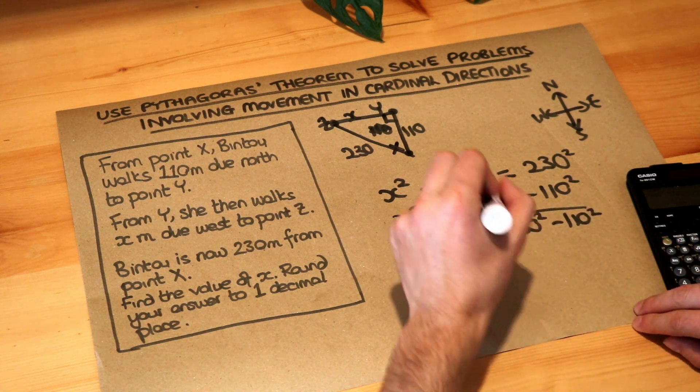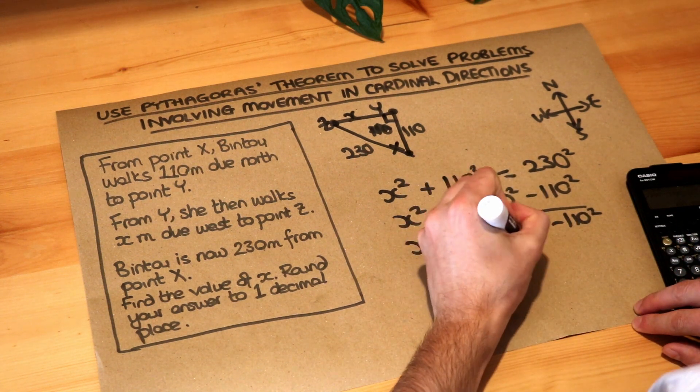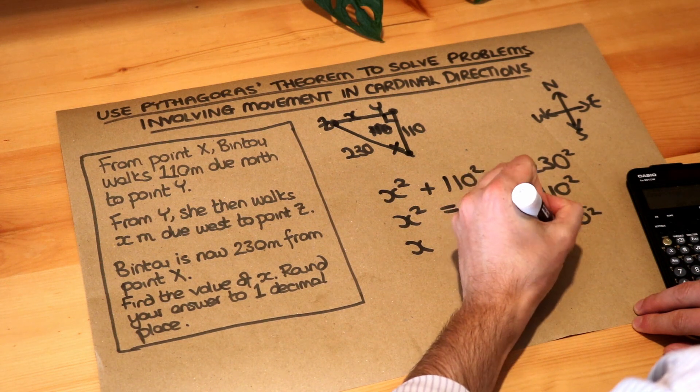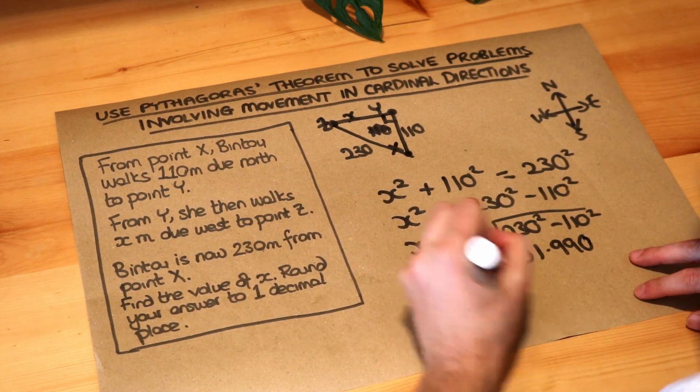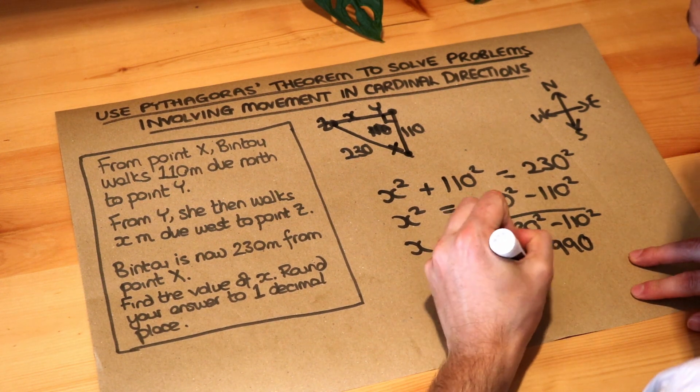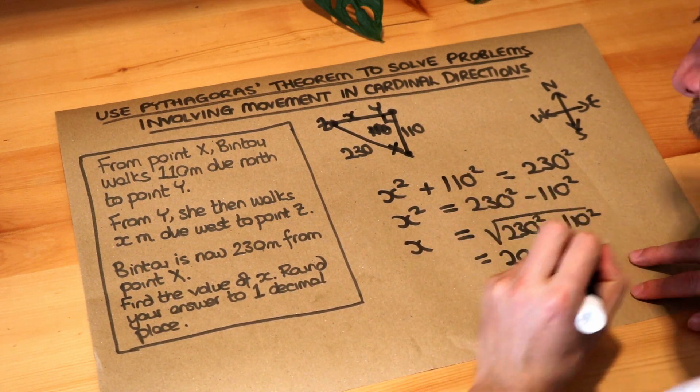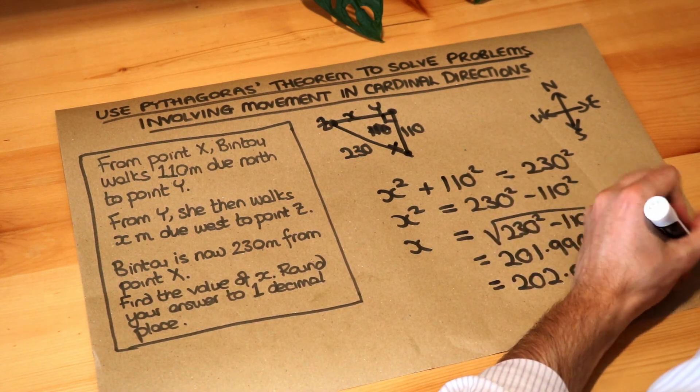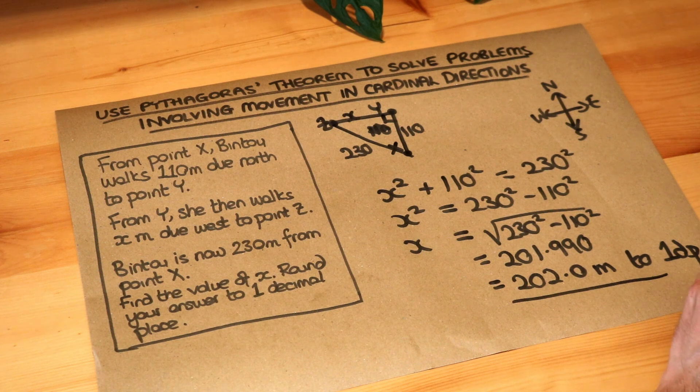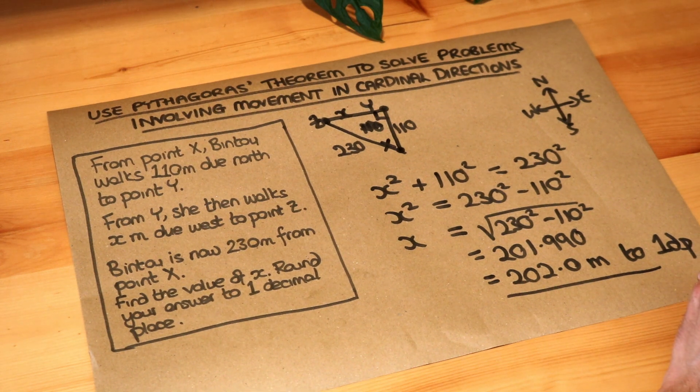And we want to get this as a decimal, so it is 201.990, and we want it to one decimal place, so that equals 202.0. The unit is meters, so meters to one decimal place. And that is the final answer.